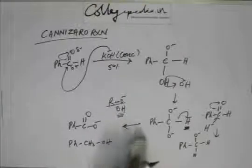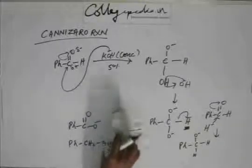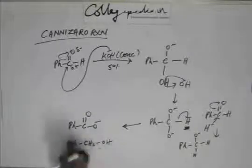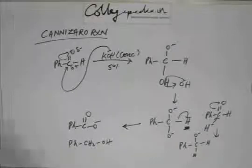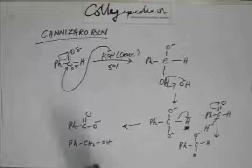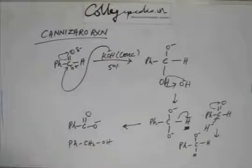So the final product of this reaction is going to be an alcohol and a carboxylate anion. Now when you further protonate at the end of the reaction, then you will be having a carboxylic acid and alcohol.